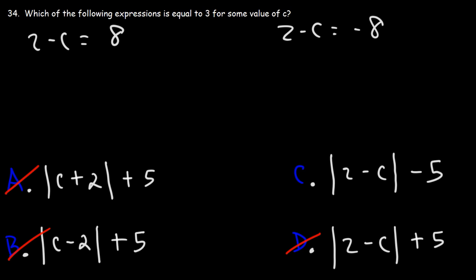And then solve. So I'm going to subtract both sides by 2. Negative c is equal to 8 minus 2, which is 6. And then if you multiply both sides by negative 1, you'll get c is equal to negative 6.